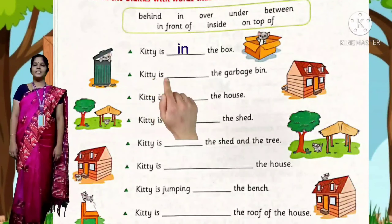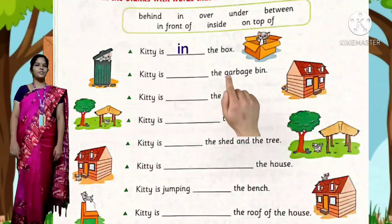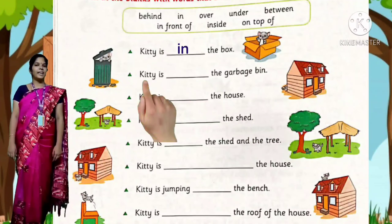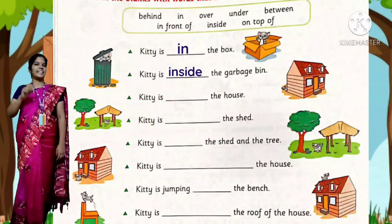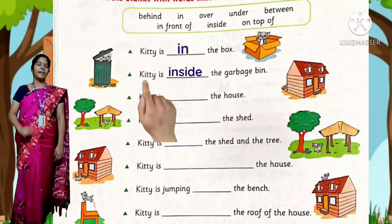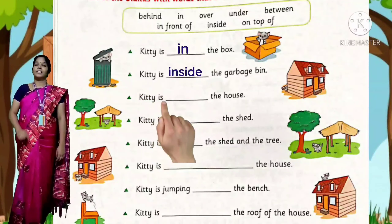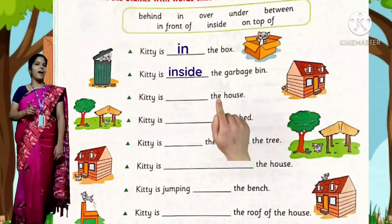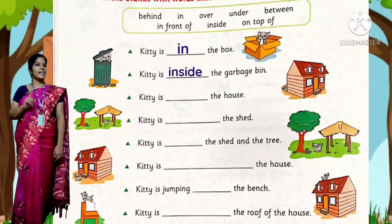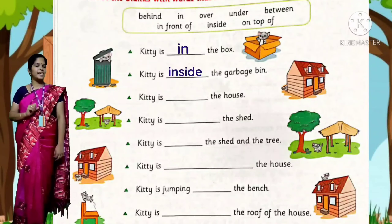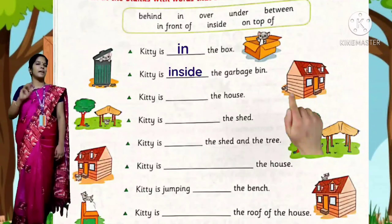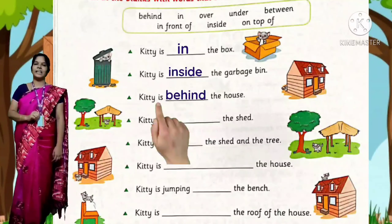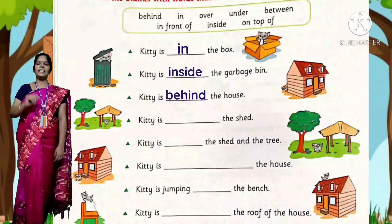Kitty is ___ the garbage bin. Kitty is inside the garbage bin. Next: Kitty is ___ the house. Kitty is behind the house.